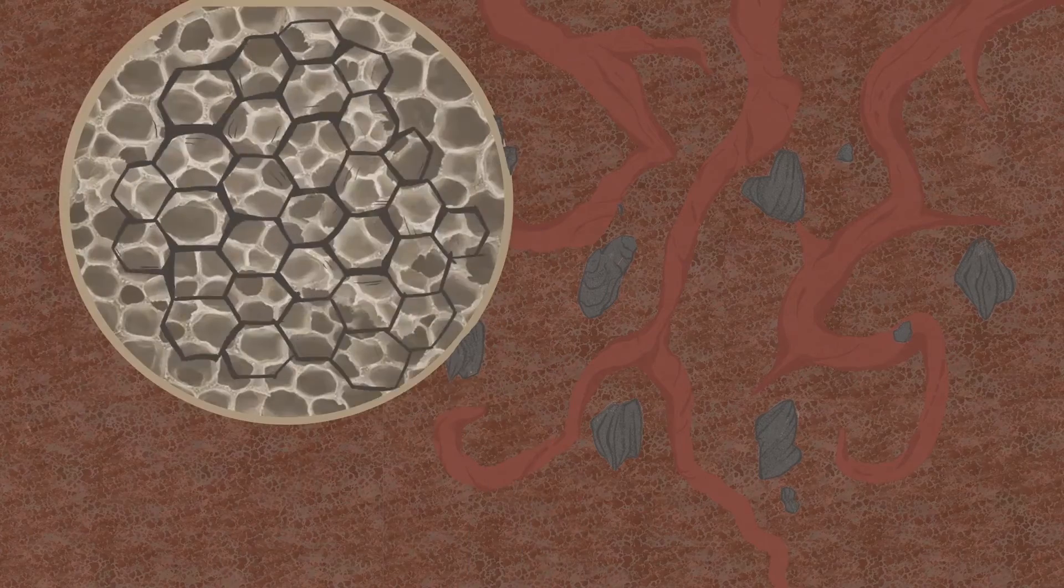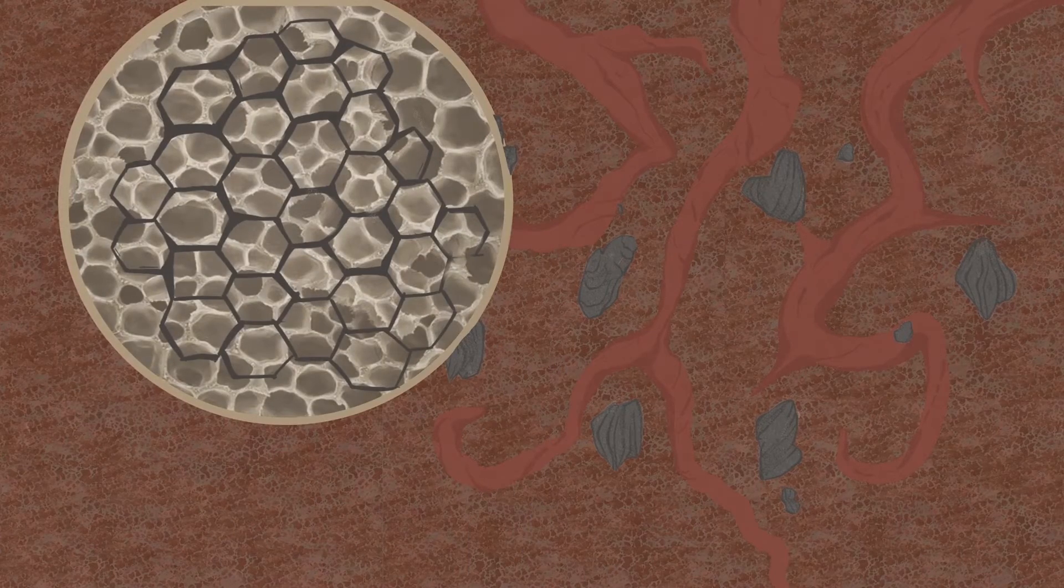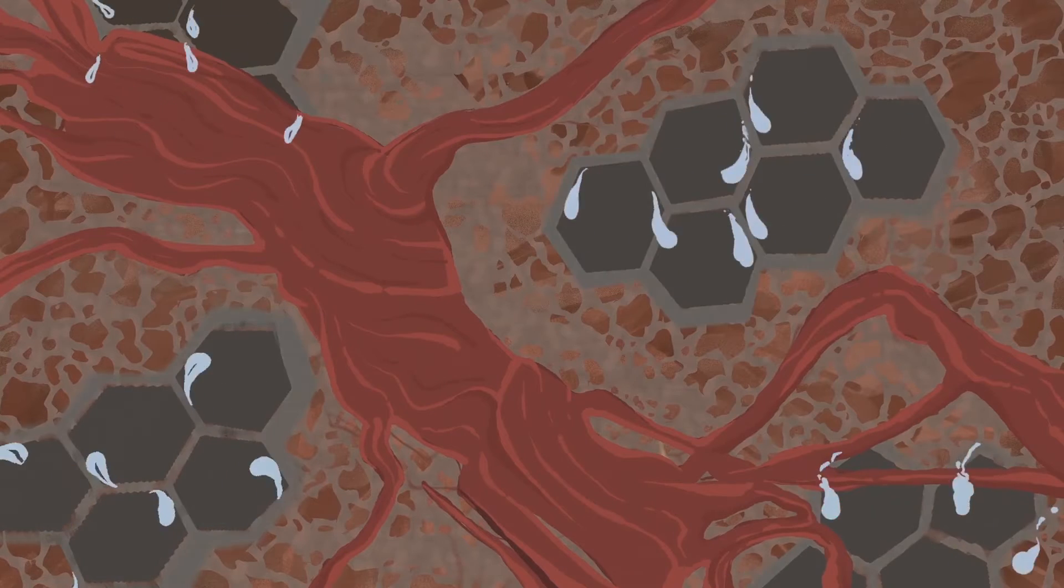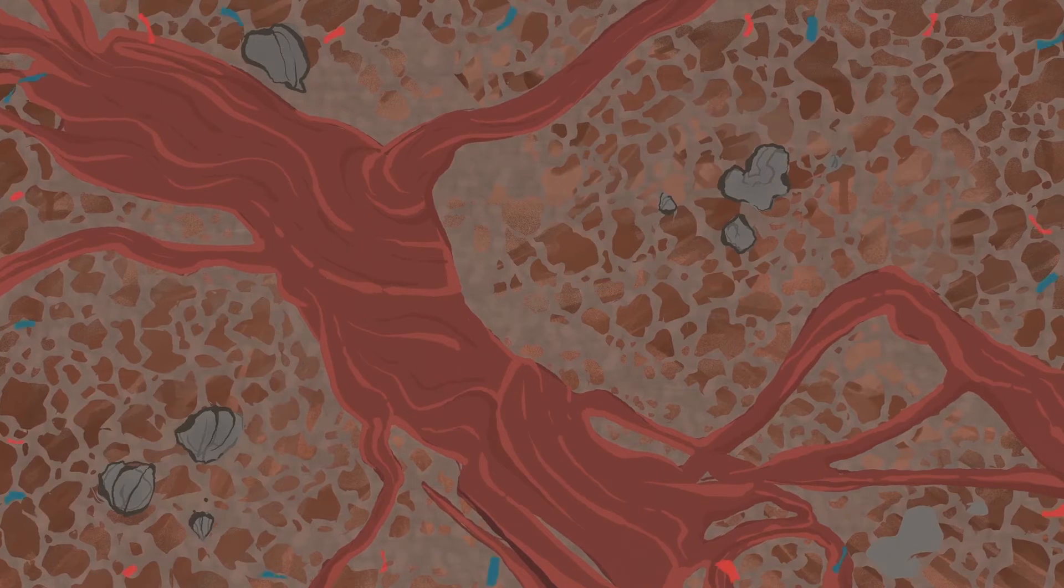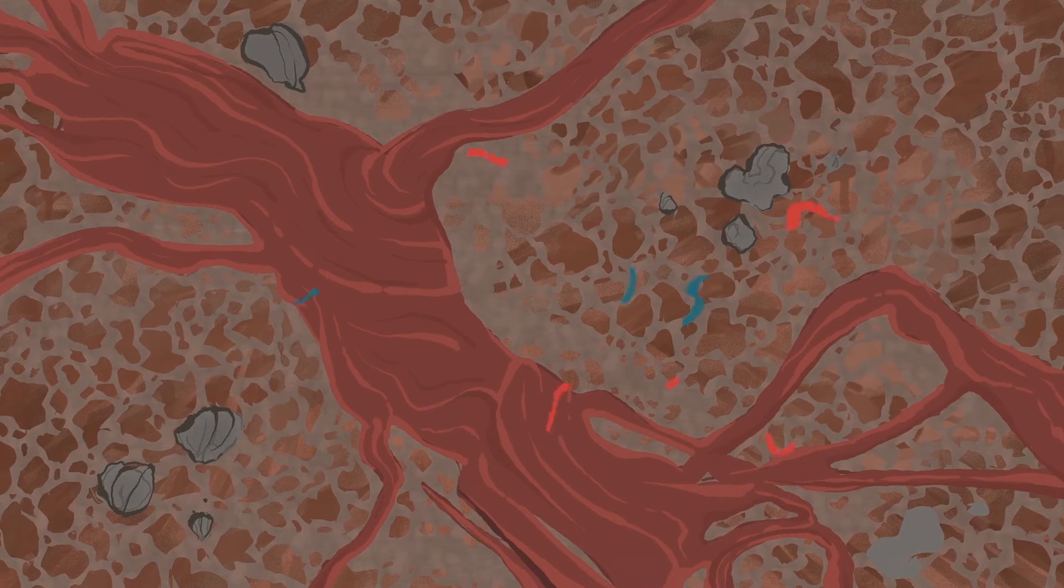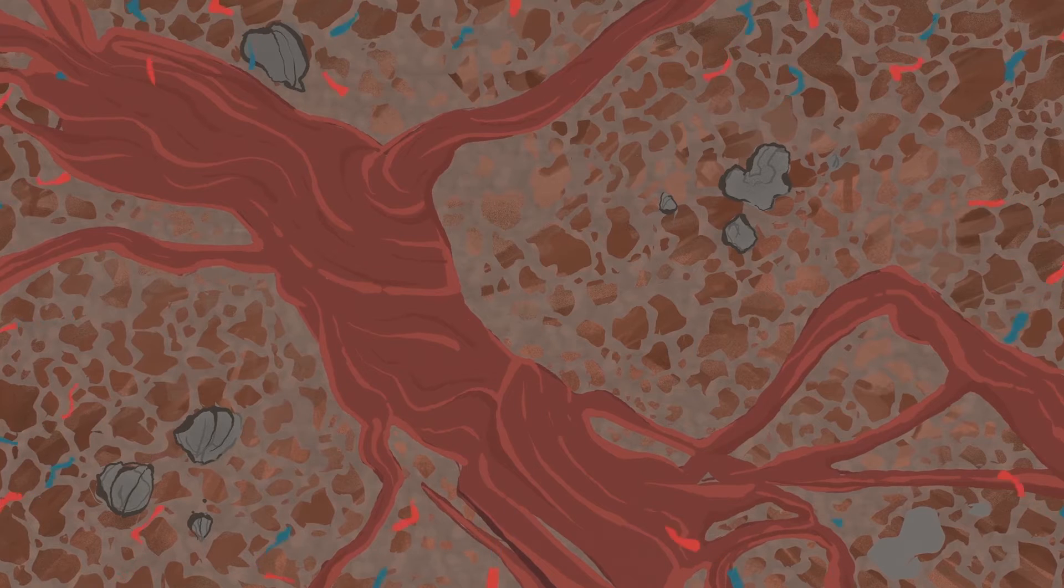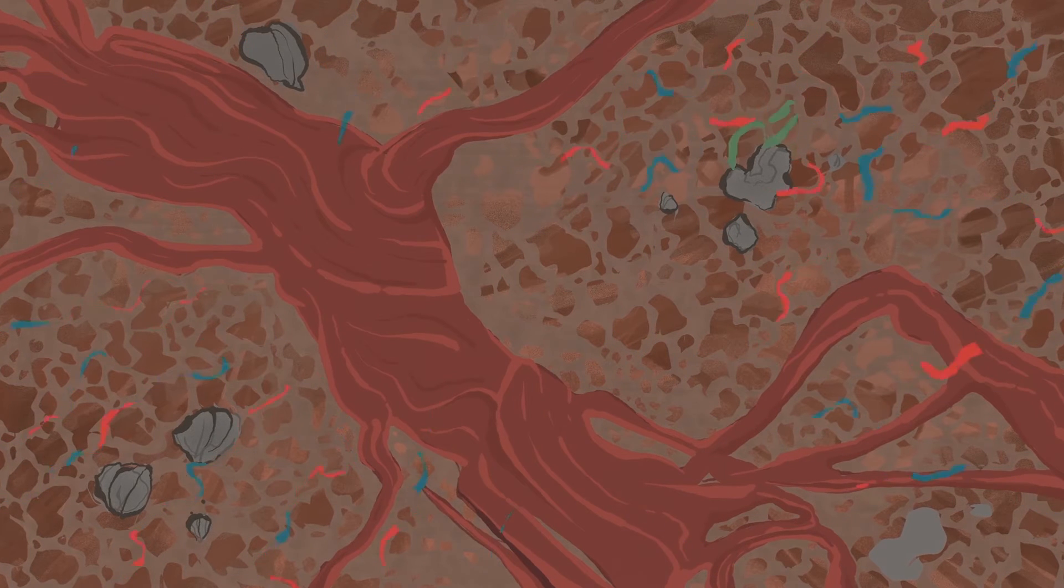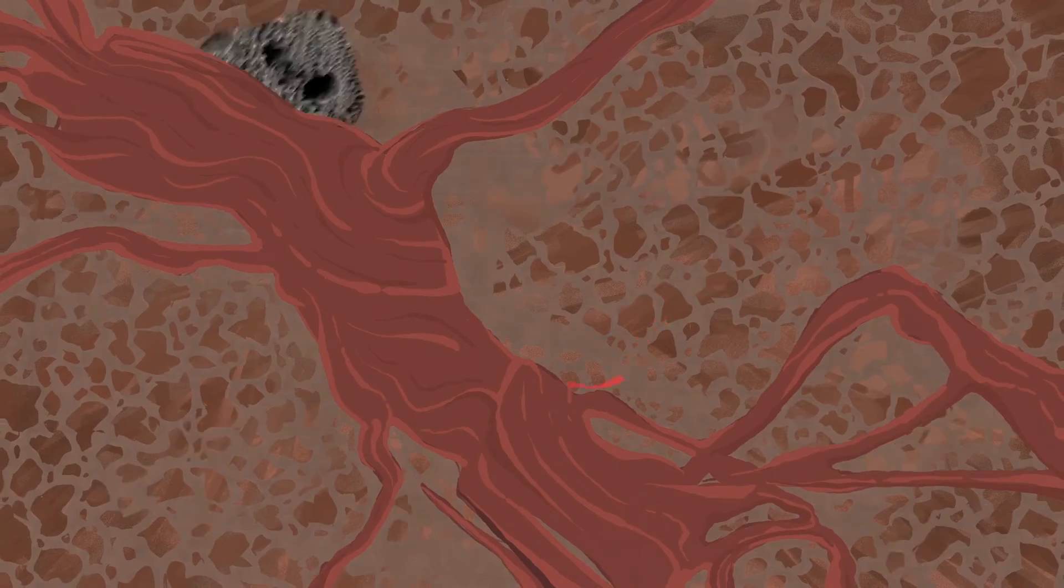Physical: Biochar's microscopic honeycomb structure improves the aeration, water holding capacity, and nutrient retention of soil and stops it getting compacted, meaning all the essentials that plant roots need are readily available and easily accessible.